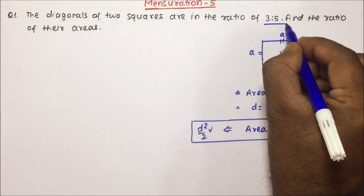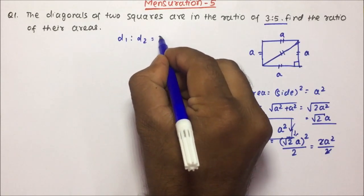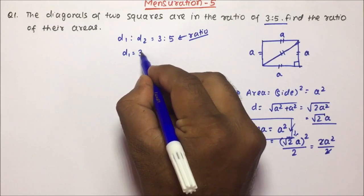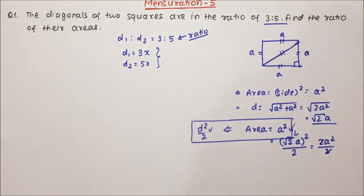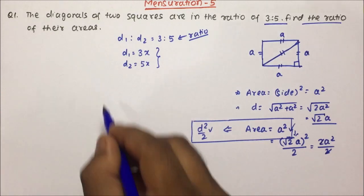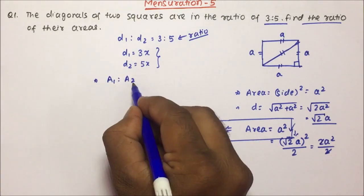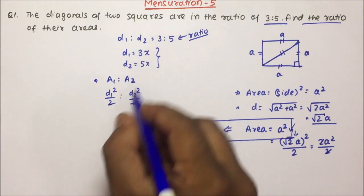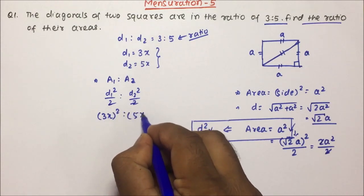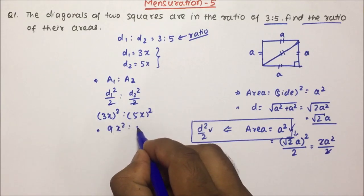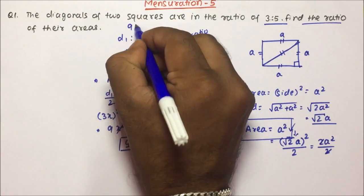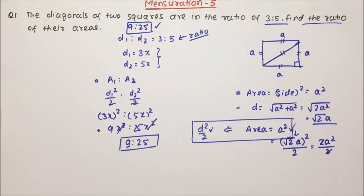Now the diagonals of 2 squares are in the ratio of 3 is to 5. So diagonal 1 and diagonal 2 are in ratio 3:5. We write d1 = 3x and d2 = 5x. We have to find the ratio of areas A1 and A2. Area = d²/2, so the 2s cancel and we get A1:A2 = (3x)²:(5x)² = 9x²:25x². The x² cancels, giving the ratio of areas as 9 is to 25. This is the correct answer for question 1, where we calculated area in terms of diagonal.